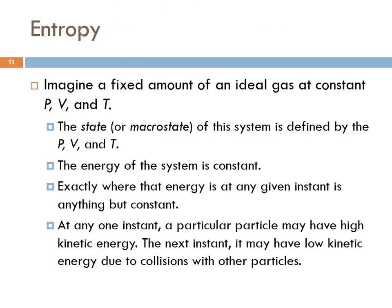Now let's try to figure out what that means. Imagine a fixed amount of an ideal gas where pressure, volume, temperature, and N are all constant. We can define the state of that system — also known as the macrostate — by looking at P, V, and T. So we can say we have 1 mole of gas at STP; we have defined the macrostate. The energy of that system will be constant, but exactly where the energy is at any given instant is anything but constant, because those gas molecules move around.